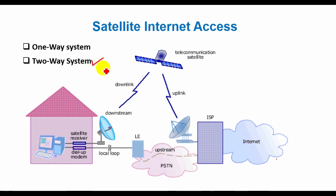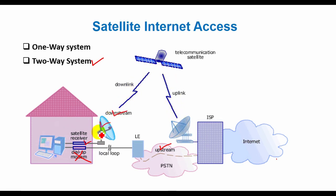A two-way satellite system, in contrast, carries both upstream and downstream internet traffic over satellite links. Therefore, a dial-up modem is not required. Like a one-way system, a two-way system uses a satellite card and a satellite dish installed at the end-user's site. Bidirectional communication occurs directly between the end-user's node and the satellite. Home satellite systems are asymmetric — that is, download speeds are faster than upload speeds. A home satellite system is likely to use a modem for the uplink traffic, with downloads coming over the satellite link.